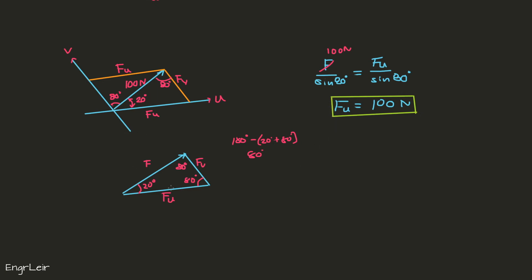Now let us solve for f sub v. We can solve it again using the law of sines. We have f over the angle opposite f, which is 80 degrees, equals f sub v. The angle is 20 degrees, so we have here sine of 20 degrees. Solving for f sub v, remember f is 100 Newtons, so we get...